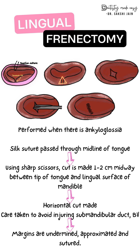Using sharp scissors, a cut is made one to two centimeters midway between the tip of the tongue and the lingual surface of the mandible. A hemostat is placed at the anterior attachment of the frenum and another hemostat at the inferior attachment of the frenum, after which the cut is given. This is a cross diamond-shaped incision — a horizontal or transverse cut.